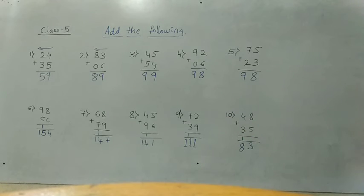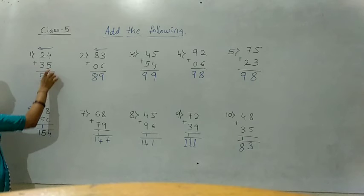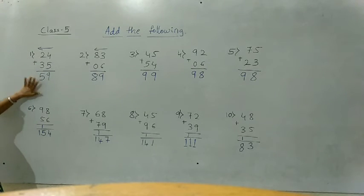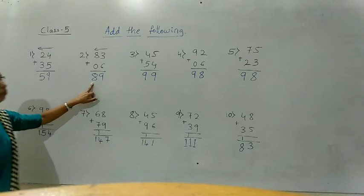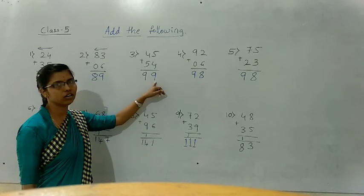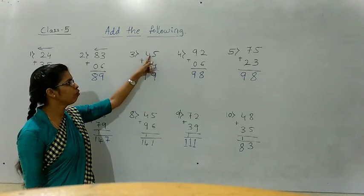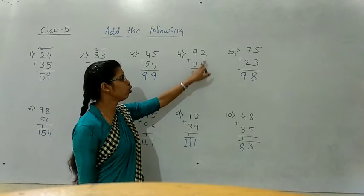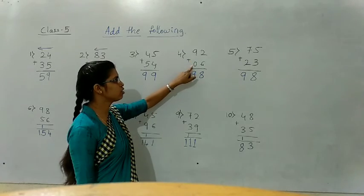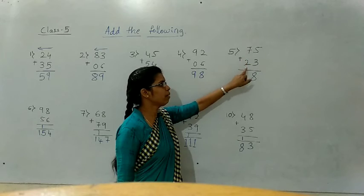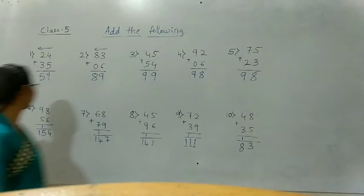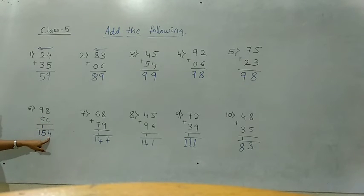Write all of this in your classwork book and practice in your draft book also. Again I am explaining — listen. 4 plus 5 equals 9. 2 plus 3 equals 5, so that answer is 59. 3 plus 6 equals 9, so 89. 5 plus 4 equals 9, 4 plus 5 equals 9 — answer is 99. 2 plus 6 equals 8, 9 plus 0 equals 9, that is 98. 5 plus 3 equals 8, 7 plus 2 equals 9 — that is 98. 8 plus 6 equals 14. If the answer comes in 2 digits, write the ones digit in the ones place and carry the tens digit.